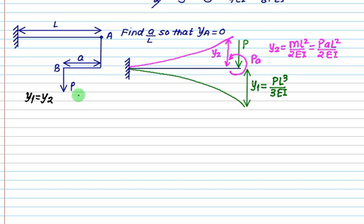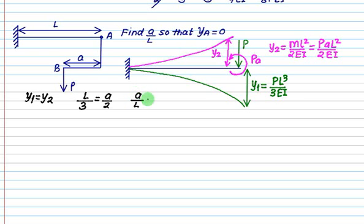So P will be cancelled. L squared is 1L divided by 3, and on the other side we have A by 2. So A by L equals 2 by 3.